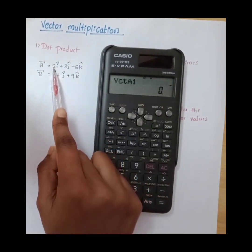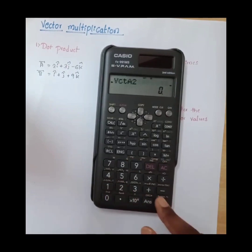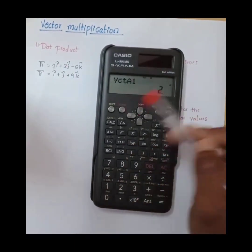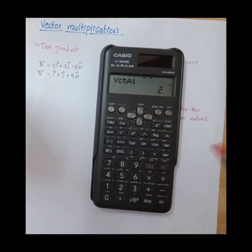Here a1 is two, a2 is three, a3 is minus six. Two equals, three equals, minus six. So here we have entered a1, a2, and a3 values.